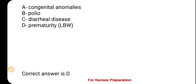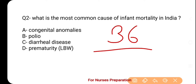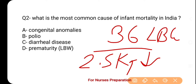And the correct option is option number D — Prematurity, which is LBW. Premature delivery means birth before 36 weeks, and the baby is called a premature infant. If the baby's birth weight is less than 2.5 kg, it is called LBW (Low Birth Weight). In India, the main cause of IMR (Infant Mortality Rate) is considered to be prematurity and LBW. Other factors like birth injury, asphyxia, and neonatal sepsis are also significantly responsible for IMR.